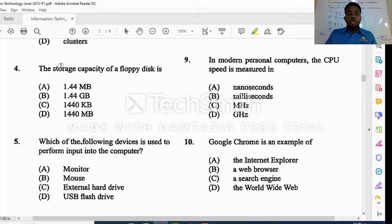It says the storage capacity of a floppy disk is, and we know it's referred to as 1.44 megabytes. It is the smallest storage device out there, 1.44 MB.